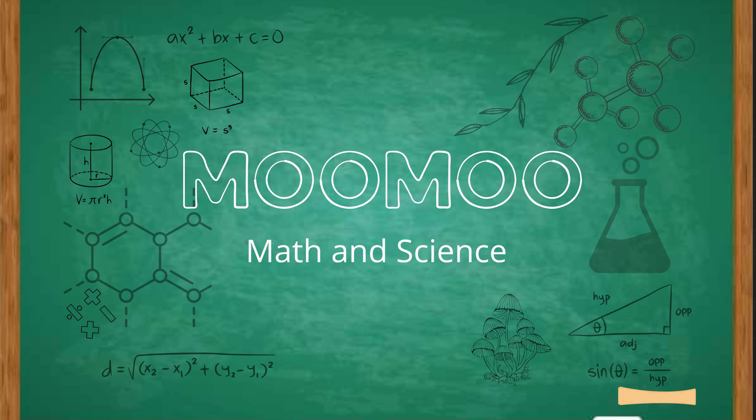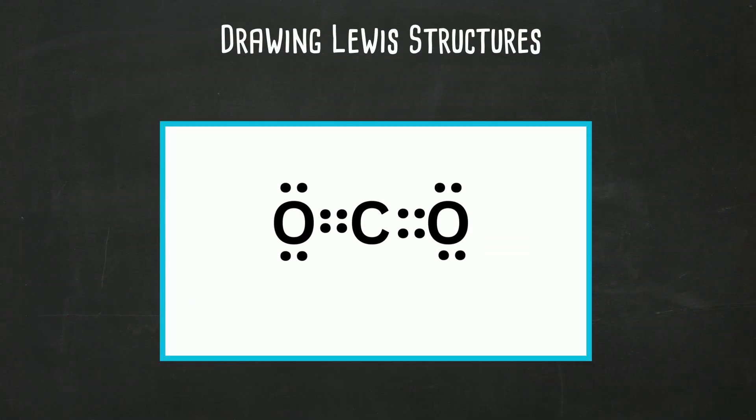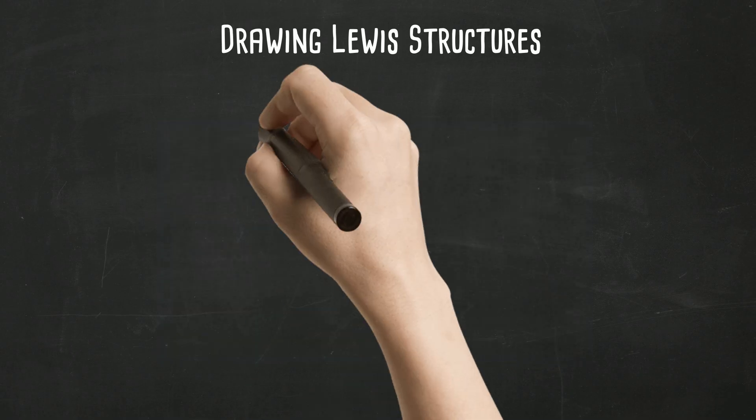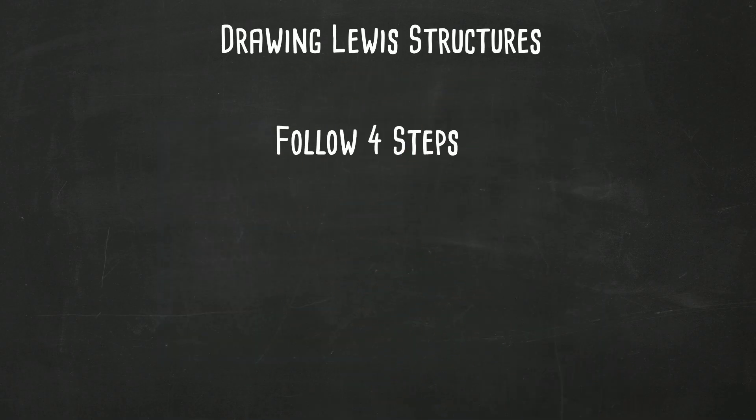In this video let's figure out how to draw Lewis structures with covalent compounds. To begin with, let me quickly go over what we're going to do and then I'll work examples. We're going to basically follow four steps.